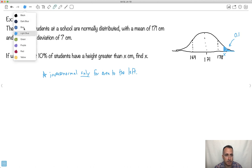That area then must be 0.9. Does that make sense? 0.9 is to the left of this x value. So that's why I'm going to say inverse normal.